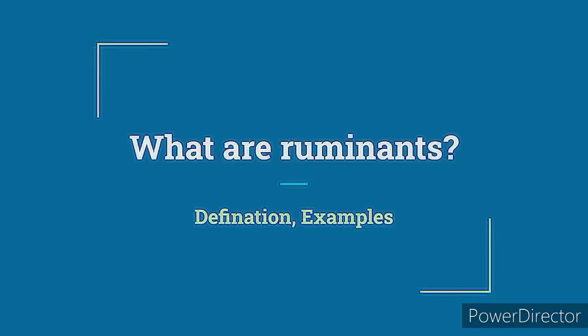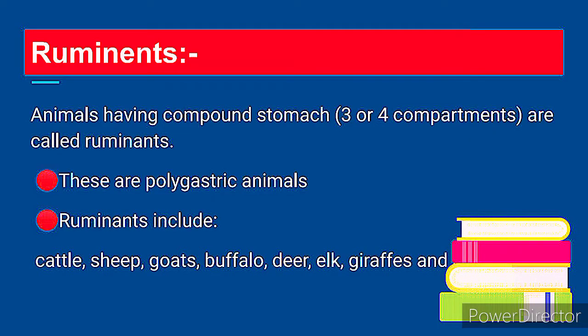What are ruminants? Let's discuss the digestion and examples. Ruminants are those animals having a compound stomach, meaning it comprises three to four compartments. These are called polygastric ruminants.